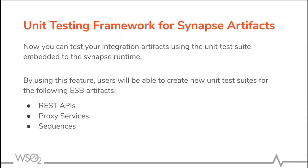Another key feature shipped with Enterprise Integrator 6.6.0 is the unit testing framework for Synapse mediation artifacts. With this feature, you will be able to write unit tests for the mediation flows you are developing. We support writing tests for the following mediation artifacts: proxy services, APIs, and sequences. This unit test suite will assert the tests on three phases: deployment, mediation, and the assertion of the response. It will help to make sure that any issues that can happen at artifact deployment, mediation runtime, and in the response are caught.